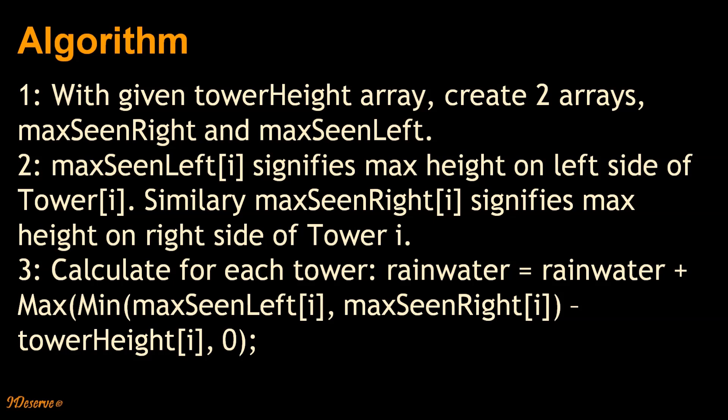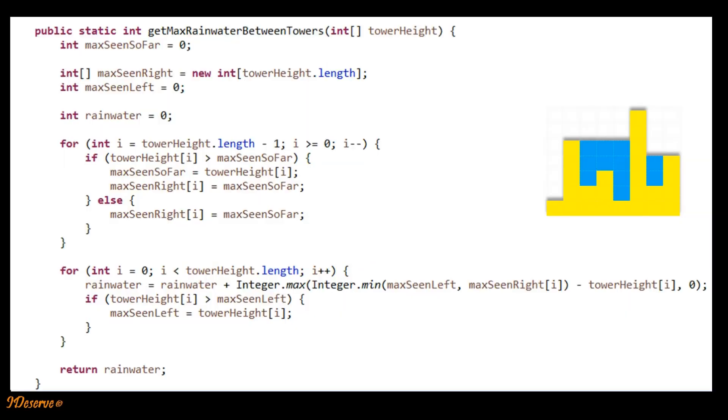Then we calculate for each tower, rain water equals rain water plus our existing formula. As per our previous discussion, we create maxSeenLeft array and maxSeenRight array. First for loop here is initializing maxSeenRight array by traversing tower height array from right and keeping track of max seen so far.